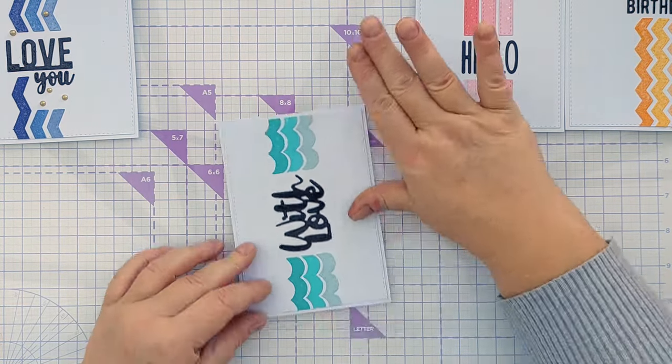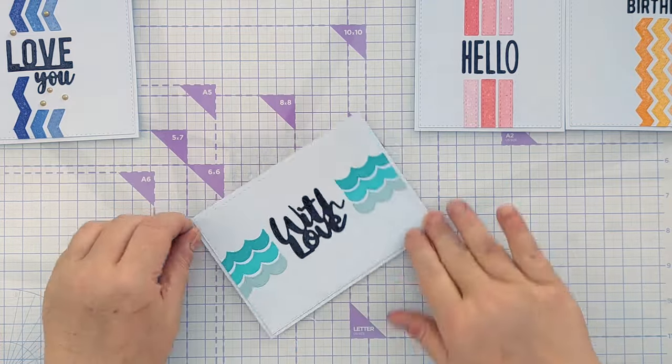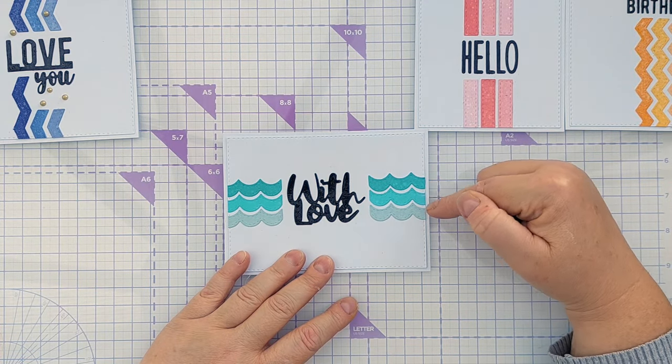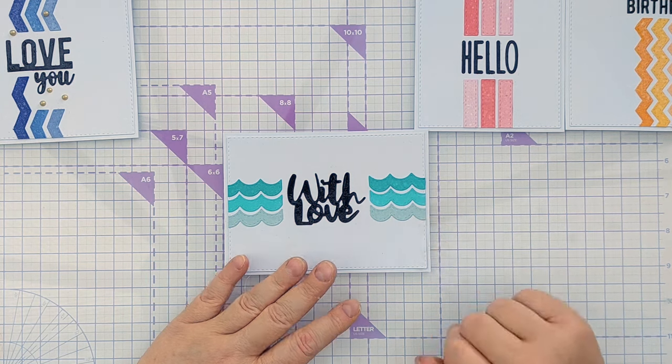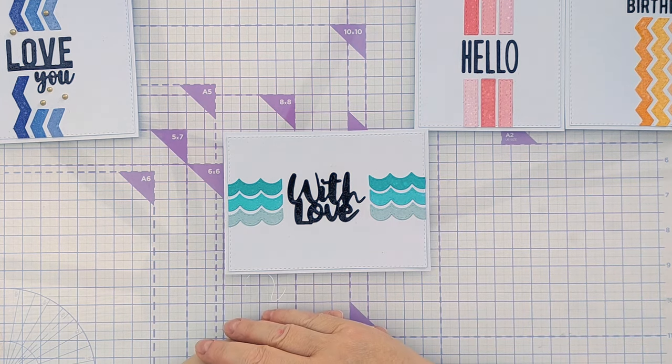And for this one I decided to go landscape because I felt the scallops looked best in a horizontal version rather than vertical. So I did the darkest at the top, then the middle, then the bottom: Peacock Feathers, Salvaged Patina, Speckled Egg, with the With Love bang in the middle.